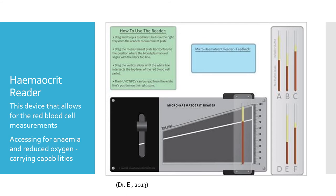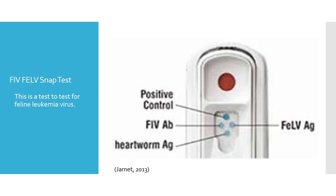Hematocrit reader. A hematocrit reader is a device that allows red blood cell measurements. This can be assessed for anemia or reduced oxygen-carrying capabilities. It is generally done before surgery or in general practice when testing blood. Studies have shown that spun hematocrit can give higher values due to plasma that can be trapped between the layers.